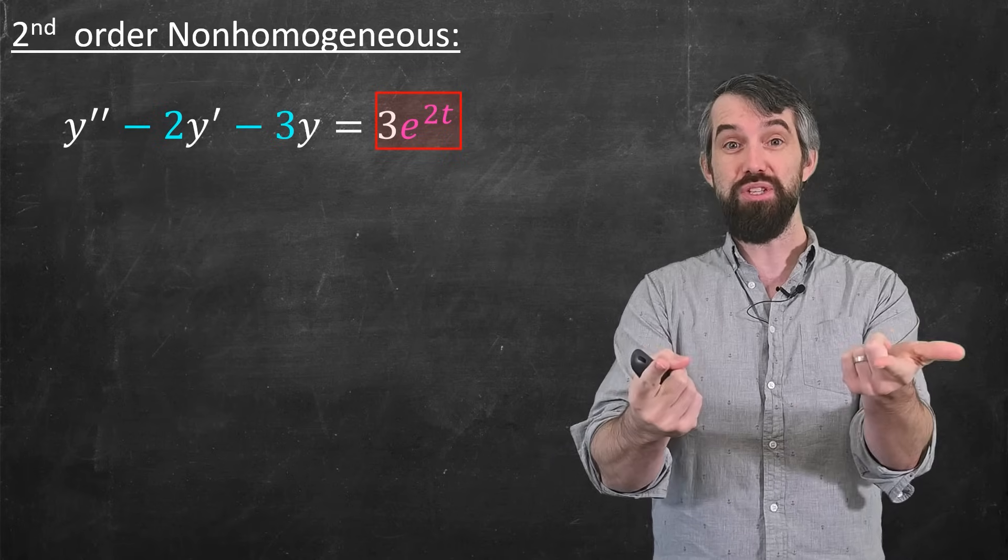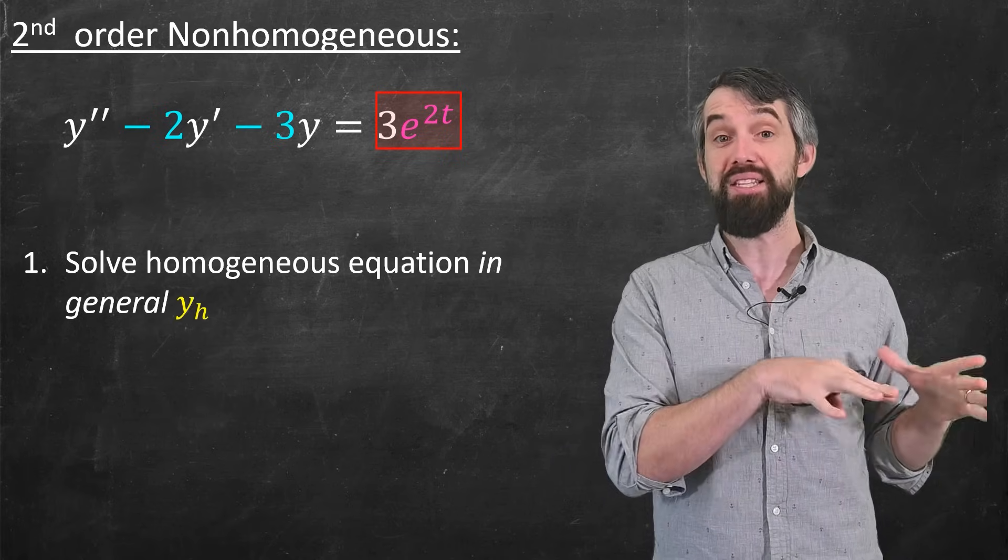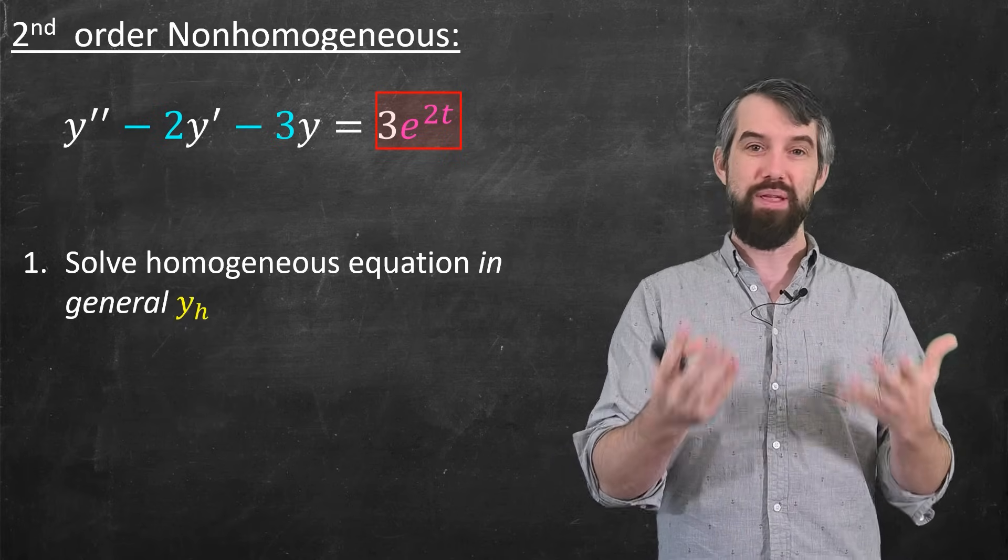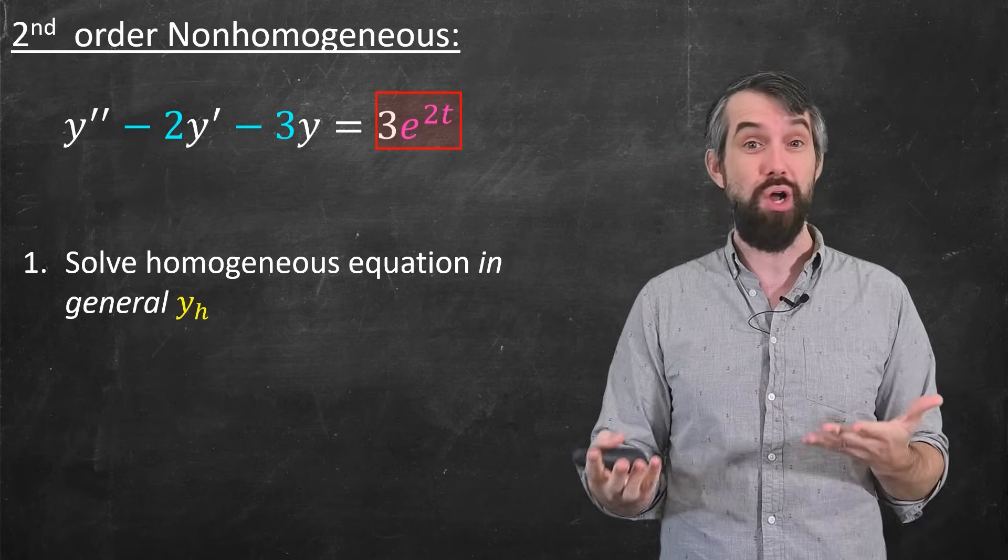First, just imagine it was 0 and solve the homogeneous. Do what we just did before.